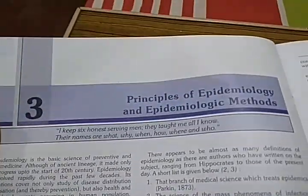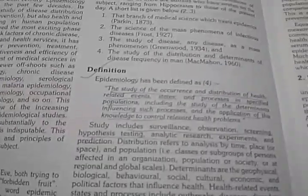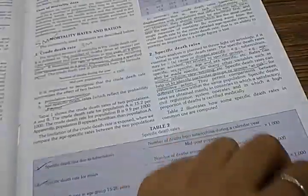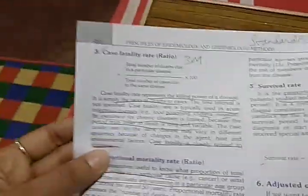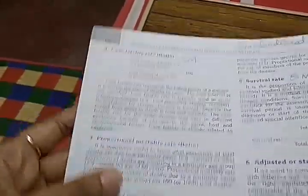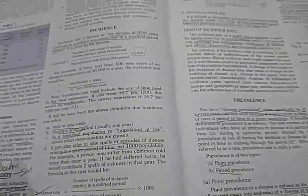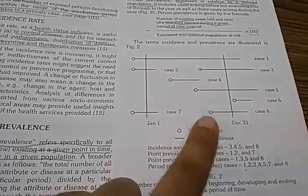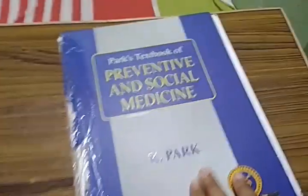Looking at principles of epidemiology and epidemiologic methods — how do you define epidemiology, epidemiology and clinical medicine. Then mortality rates: crude death rate, specific death rates, infant mortality rate, case fatality rate — so many things. Another two important terminologies: incidence and prevalence, and how to calculate them.